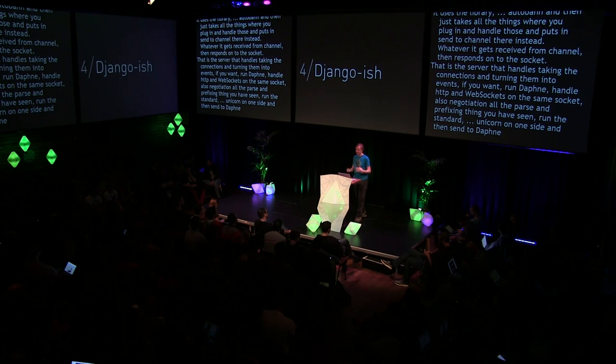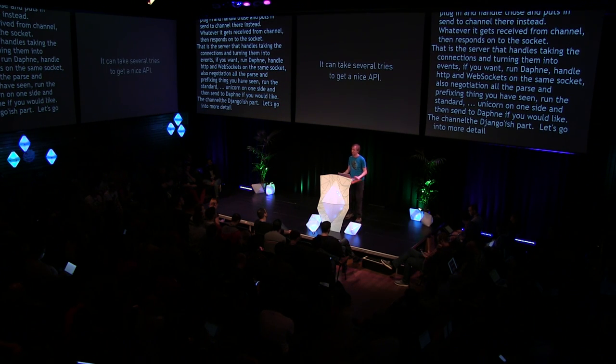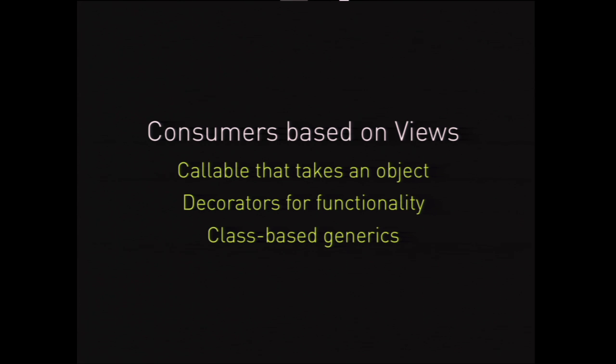Channels is the Django-ish part — let's go into detail on that. What's here has been a lot of revisions; it takes a lot of tries to get a nice API. It's still not fully there yet but most of the way there. There's no specification for what is 'Django-ish' — it's more a nuanced thing of what feels good for users, what matches expectations, what's not surprising, what's boring. Boring is good in Django world. Everything every Django developer does is write views, so what if the fundamental unit of work in channels looks basically like a view? That was my guiding principle.